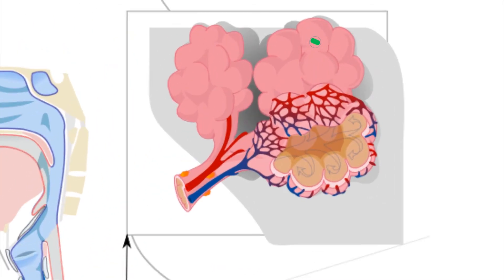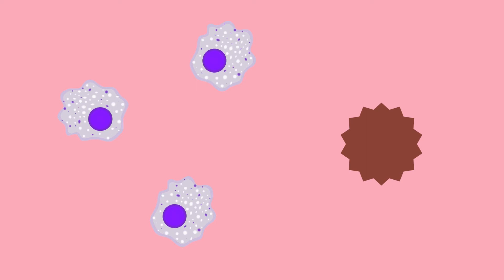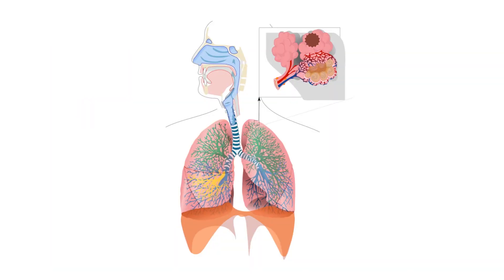Inside the alveoli, there are alveolar macrophages that engulf the bacteria and form granulomas. These granulomas can stay in the alveoli for a long period, and the patient may be diagnosed with a latent TB infection.